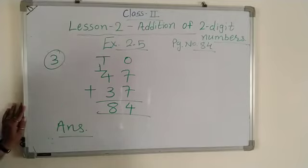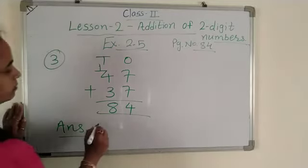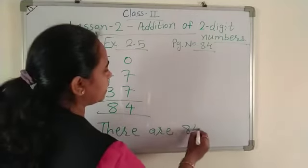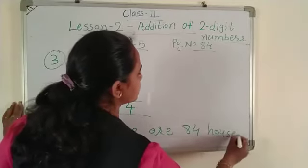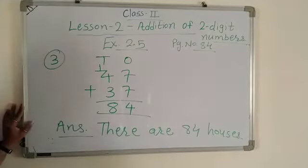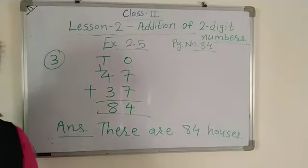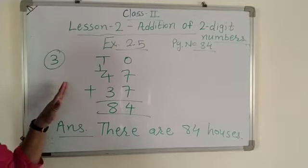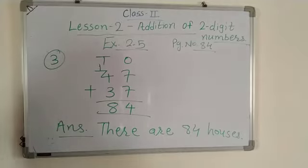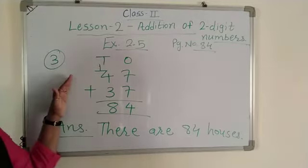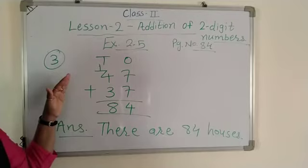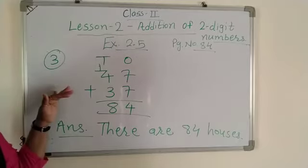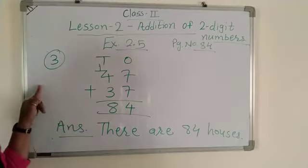84 houses. There are 84 houses. You have to write this type of answer. I will explain how to write that sentence next time. Exercise 2.5 number 3 is complete.